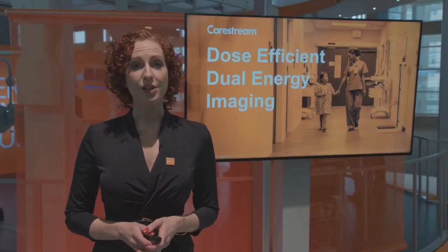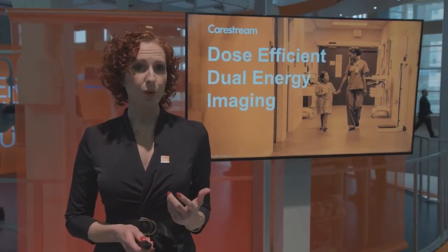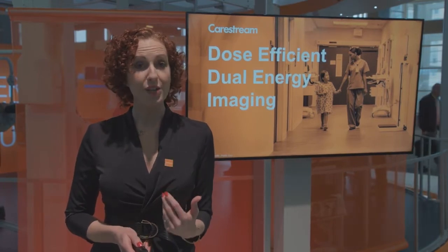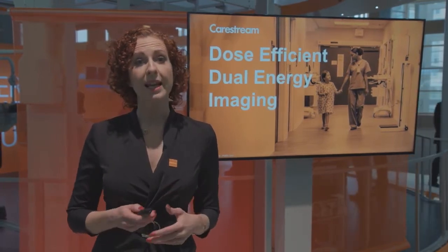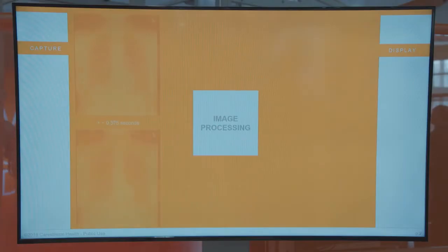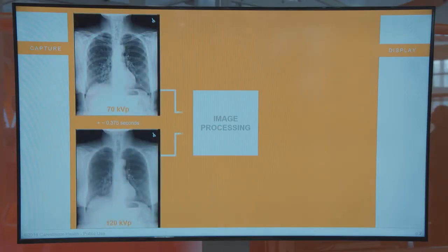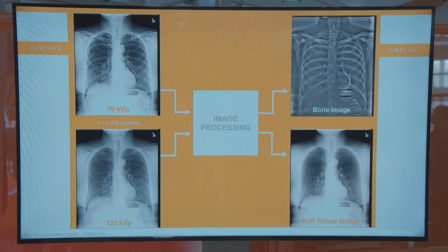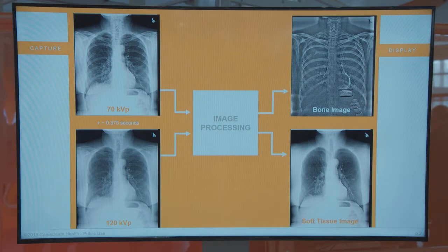As you may already know, dual energy radiography is the imaging technique which takes advantage of the different and energy-dependent absorption properties in the bone and soft tissue structures in the body. It captures two radiographic images in quick succession — one at a relatively low energy X-ray exposure and the second at a relatively high energy exposure. By taking images in this way, it's possible to mathematically derive a soft tissue-only image with the bone structures removed and another corresponding bone-only image.